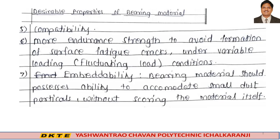Next is endurance strength: to avoid formation of surface fatigue cracks under variable loading. Variable loading means fluctuating loading conditions. Another property is embedibility, which means that bearing material should possess the ability to accommodate small dust particles without scoring the material itself. Scoring is a failure criterion for bearings.